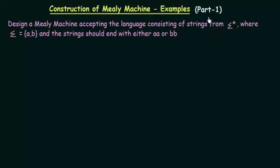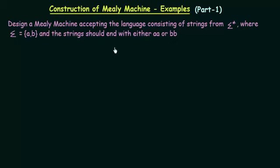In this lecture, we will be seeing an example of construction of a Mealy machine. Here is our example: design a Mealy machine accepting the language consisting of strings from sigma star, where sigma equals {A, B}, and the string should end with either AA or BB.